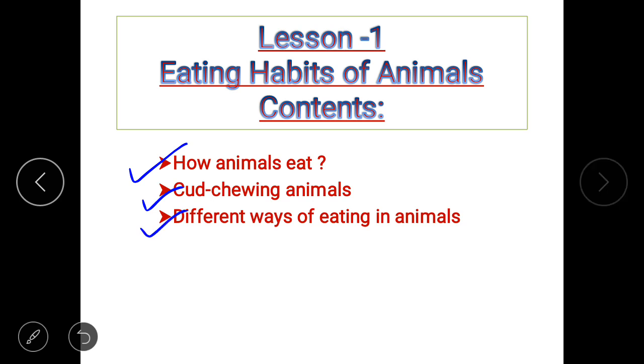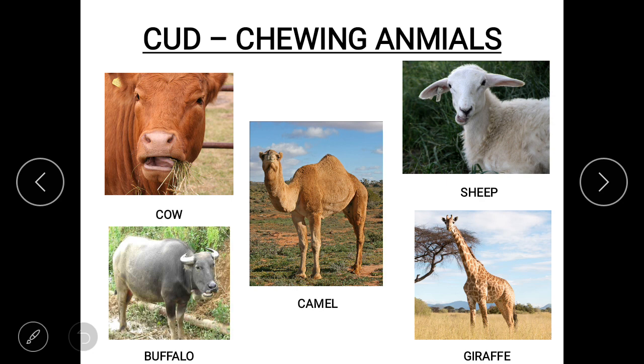So, let's move ahead. Children, I think you all have seen some plant eating animals very closely like cow, buffalo, camel, sheep, and giraffe.